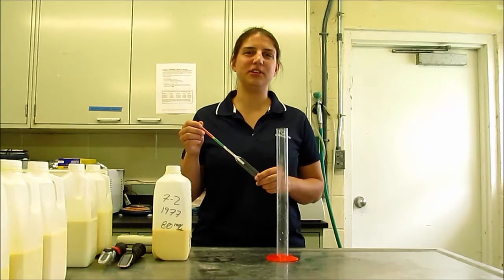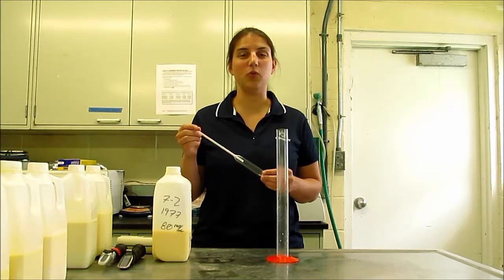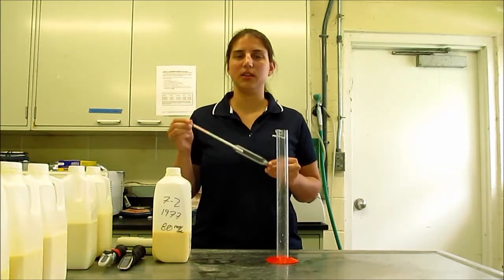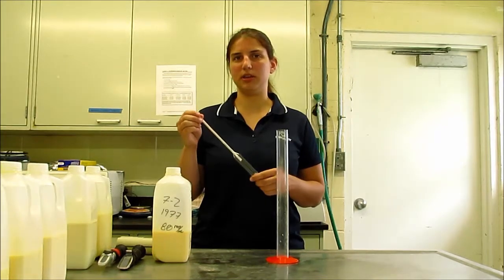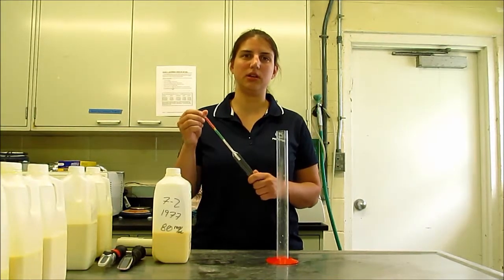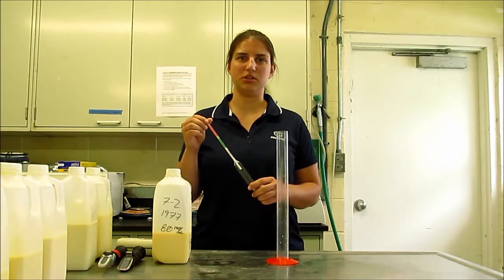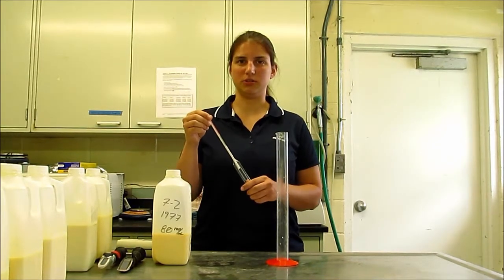There's a couple of different field tools that we can use to measure colostrum quality. One of them is a colostrometer. A colostrometer is a hydrometer that uses the correlation between colostrum density and IgG concentration to give us a measure of colostrum quality.